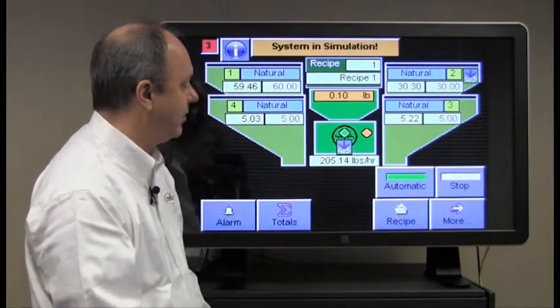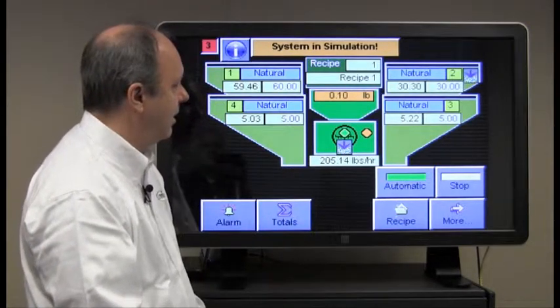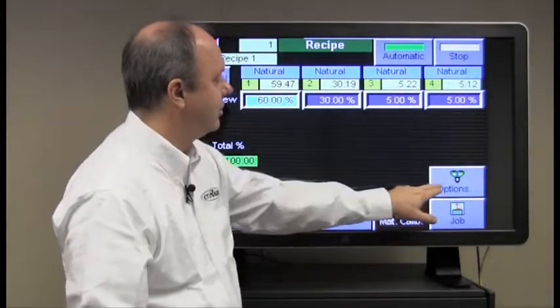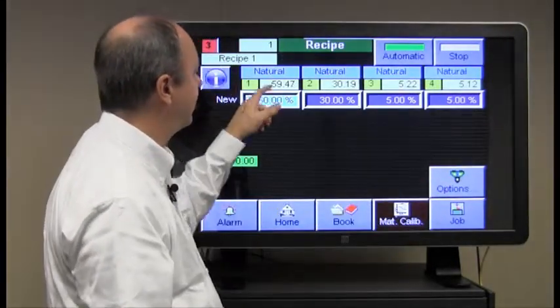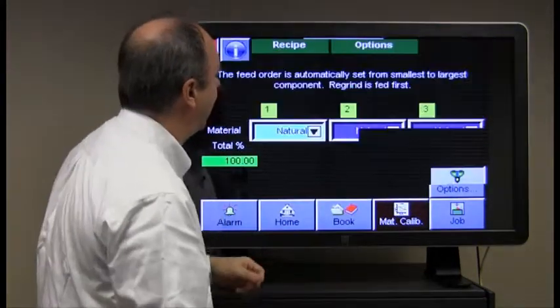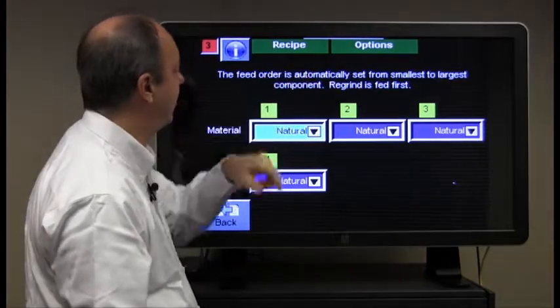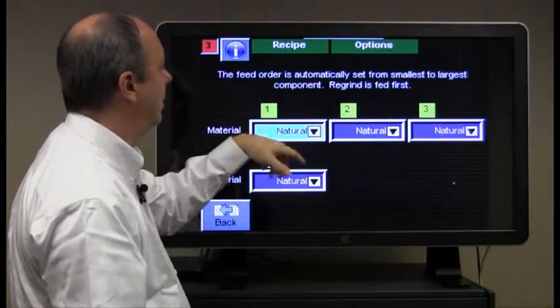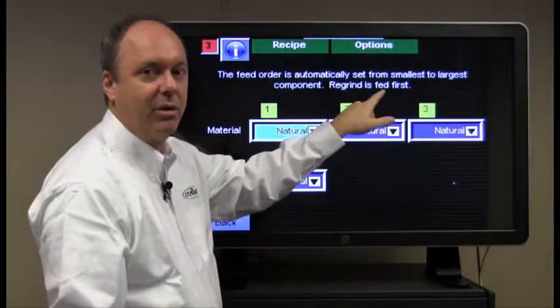So if we go back to the recipe screen we can review the operational changes under options. You can change material types under options. So we press the options button here and the options screen for recipe comes up and this is where we select the type of material that we want.